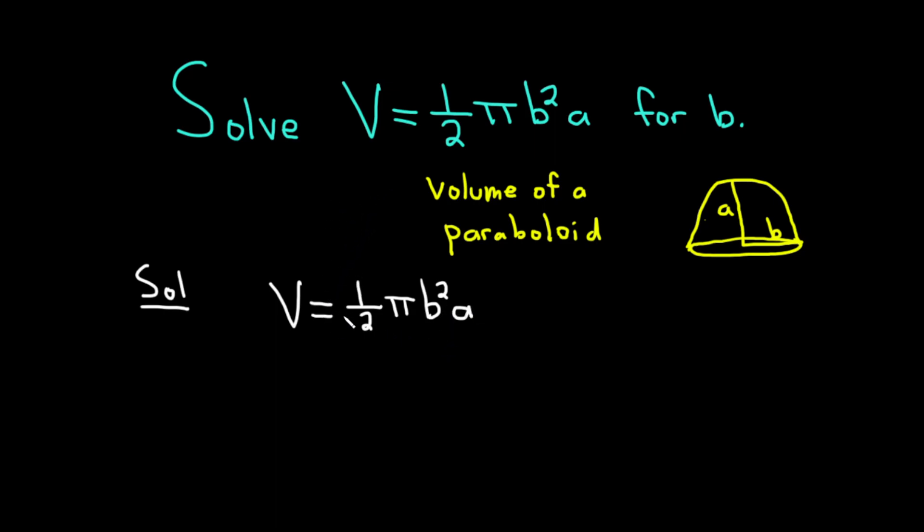Let's start by getting rid of this fraction. So I'm just going to put a 2 here on both sides. Basically multiply both sides by 2. So we have 2V = π b² a.